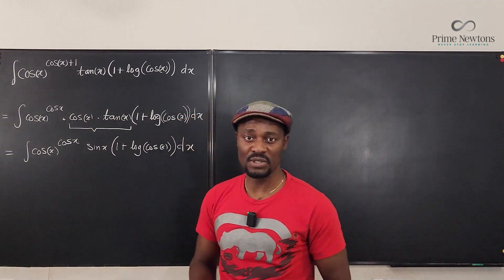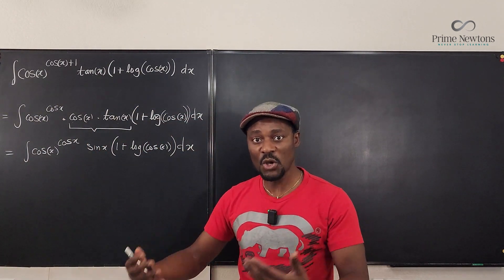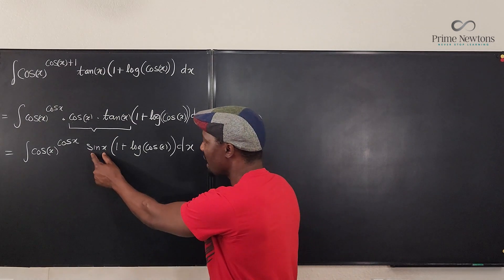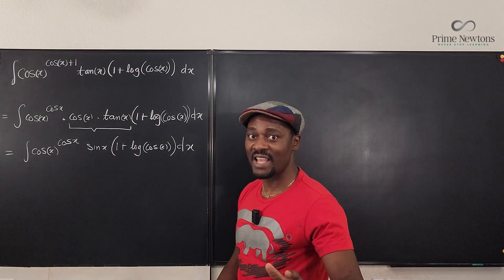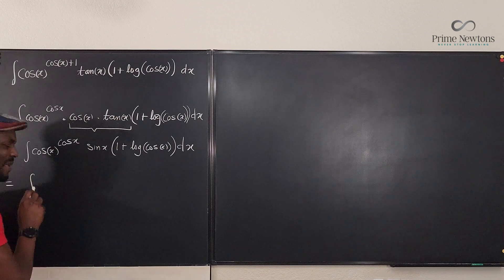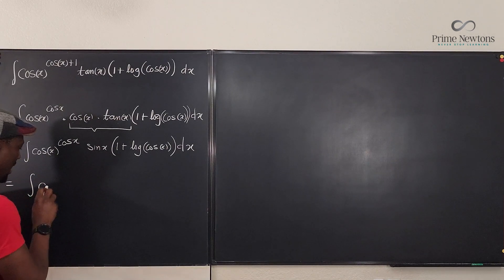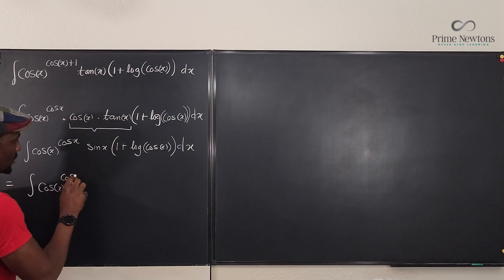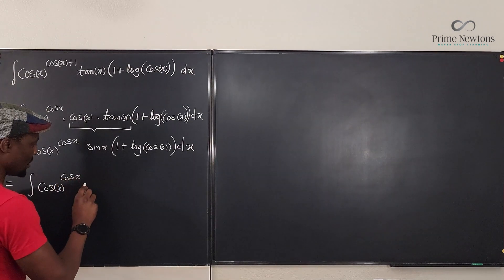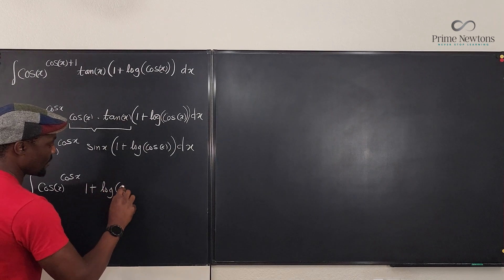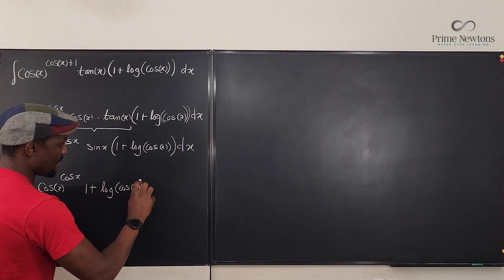Now I can do my u substitution saying that my u is cosine x. Or one more thing. Let me move the sine x here so you can see exactly what the u substitution is going to do. So one more. Just to make it easier to see, I'm going to have cosine x times 1 plus the logarithm of cosine x.